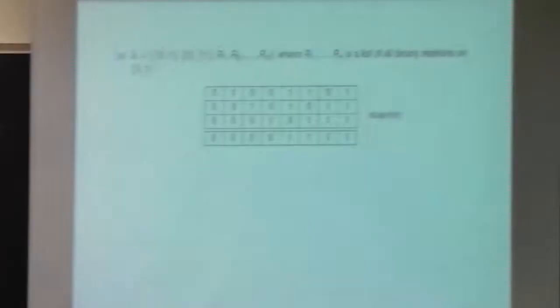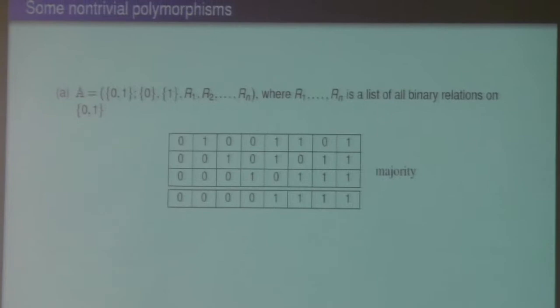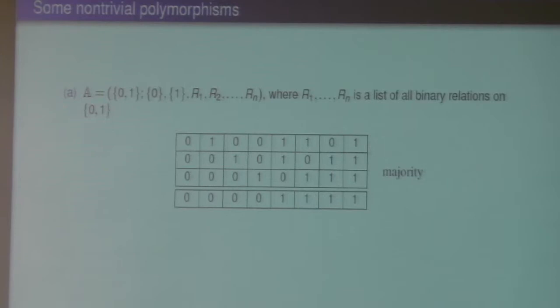Now I want to show you some non-trivial polymorphisms of some relational structures. For example, if we have the universe {0, 1} and all binary relations, the majority function preserves all of them. So, for example, for the input (1, 0, 0), it assigns 0.